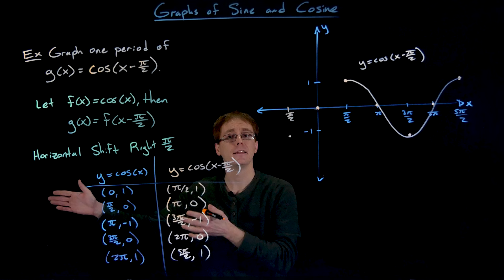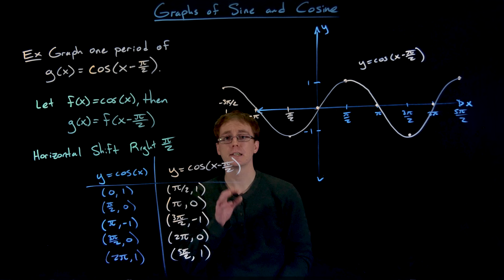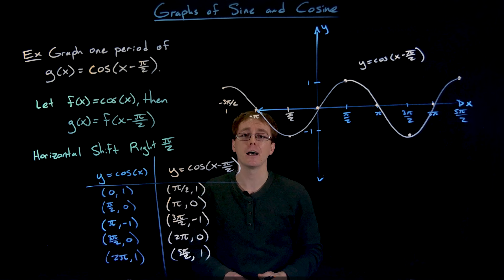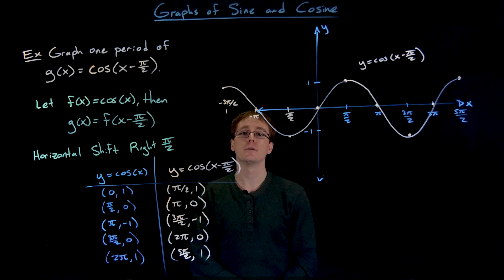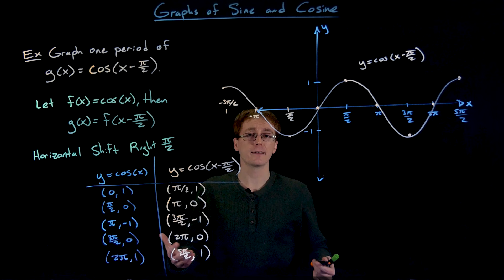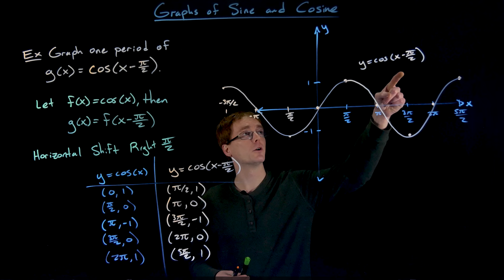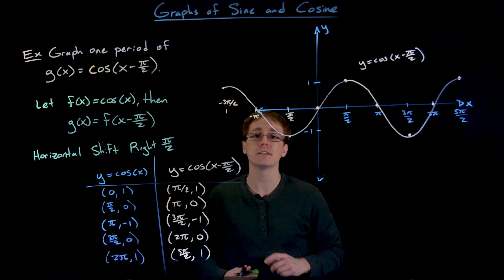And so finishing off that second period, here is what two periods of the graph of y equals cosine of x minus π over 2 looks like. Now I want you to pause for a second and see if this graph reminds you of anything else. Hopefully you recognize that, if not that's okay too. But what we can notice here is this transformation of cosine, this cosine of x minus π over 2, actually looks exactly like and is our sine function.